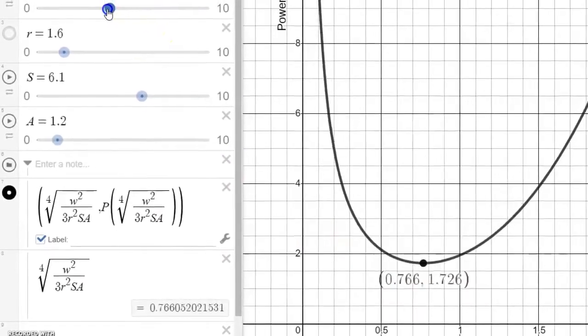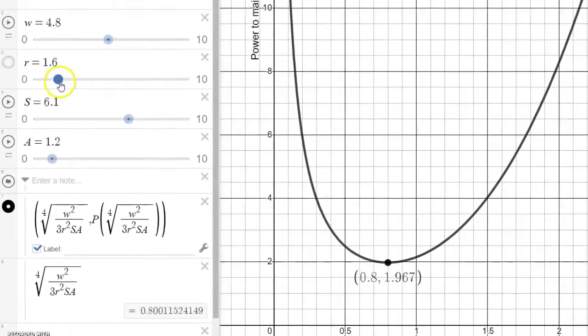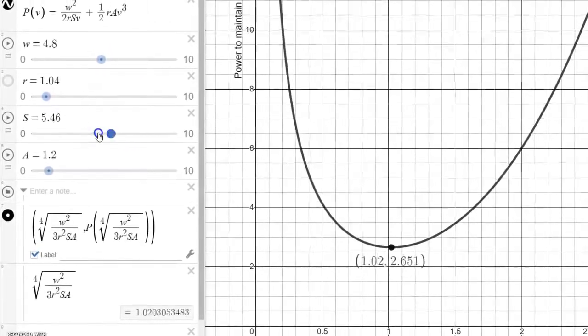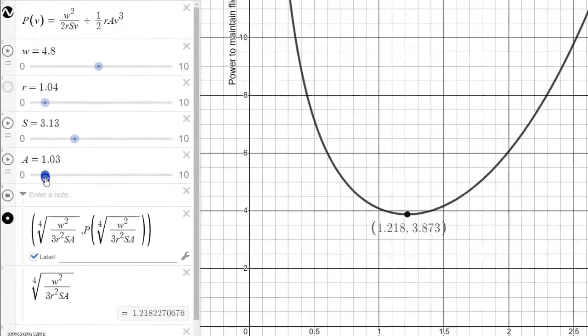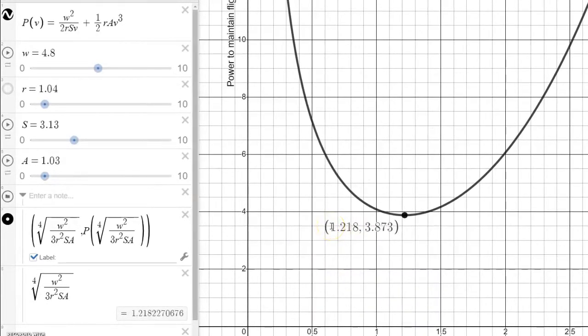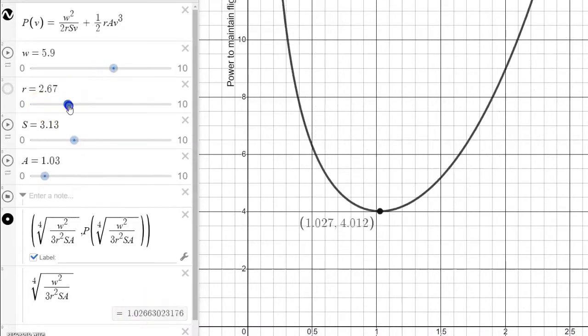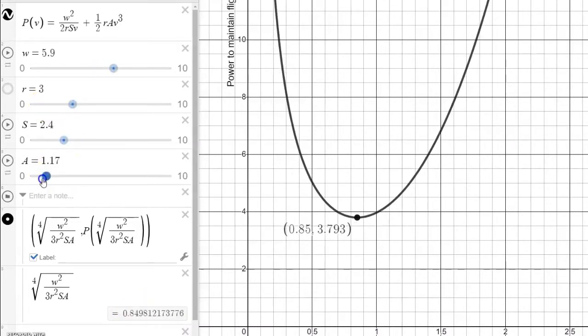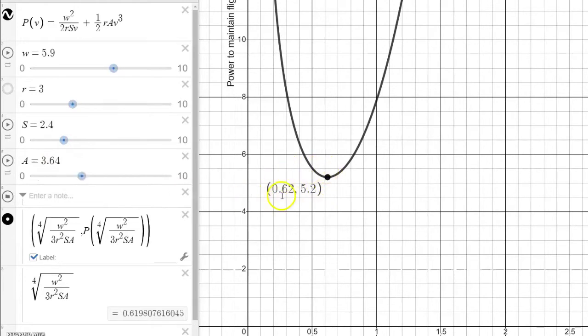So, no matter where we drag our constants for any weight of the bird, for any density of air, for any constant S and for any constant A, notice that the velocity, like here's a spot, a velocity of 1.218 units is exactly the output of that formula that we found on the board. Or if we go to another weight, another density of air, another value for S, another value for A, a 0.62 velocity is exactly, to the nearest hundredth anyway, the velocity needed to maintain flight, to minimize the power to maintain flight.